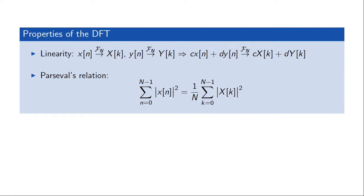The discrete Fourier transform has many properties similar to those of the discrete time Fourier transform. Linearity carries over just as we would expect. We also have Parseval's relation relating the energy in the time domain to the energy of the coefficients. Here there is an important difference in that we have a factor of 1 over N in the transform domain, so the energy of the signal equals 1 over N times the squared magnitude of the samples in the transform domain.